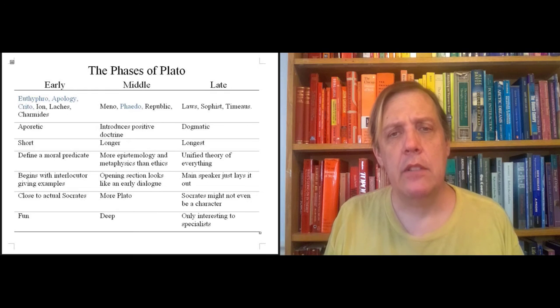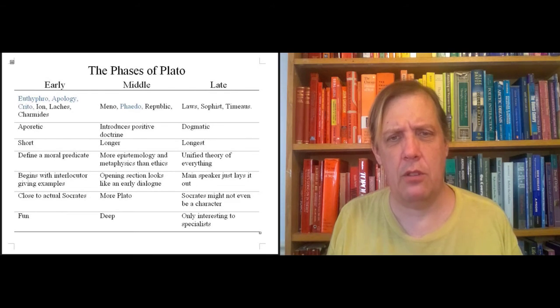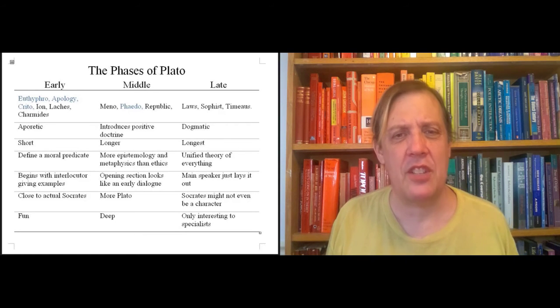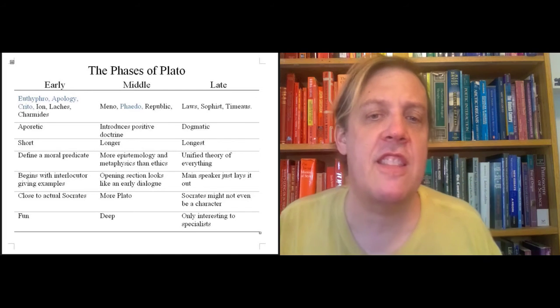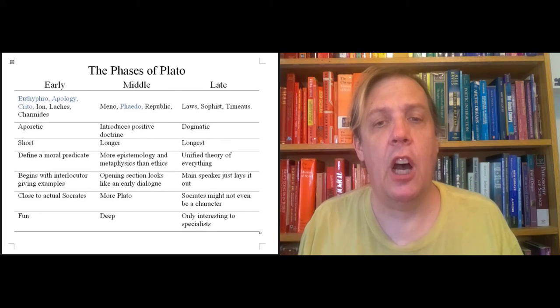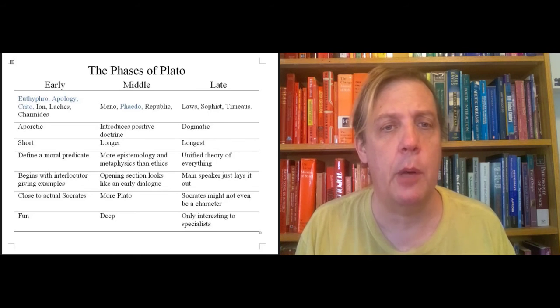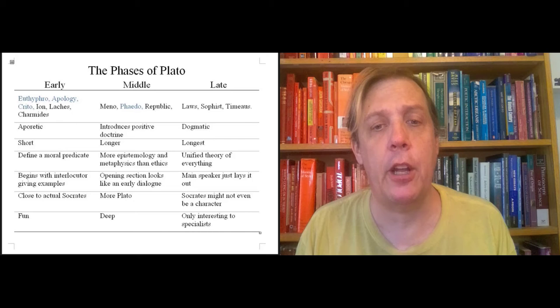Late, the later dialogues get even more dogmatic. Socrates disappears altogether as a character sometimes, and they try to present a unified theory of everything. And these dialogues are mostly just of interest to hardcore Plato fans, so we don't really deal with them. But I am giving you a little taste of middle period Plato, including Phaedo and Republic.